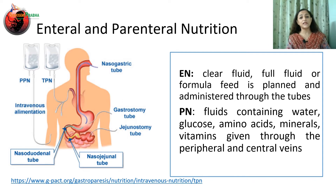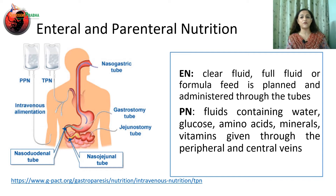We also have to assess the patient's tolerance to that particular feed. The second method is parenteral nutrition, which is adopted to deliver nutrients by a route other than the gastrointestinal tract. The main aim of parenteral feeding is to maintain a constant supply of nutrients, support early recovery, and bring the patient back to routine oral feeding. Fluids containing water, glucose, amino acids, minerals, and vitamins are given through the peripheral or central route.